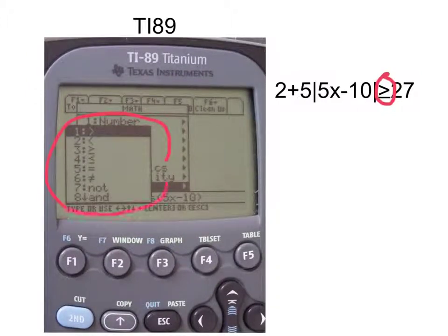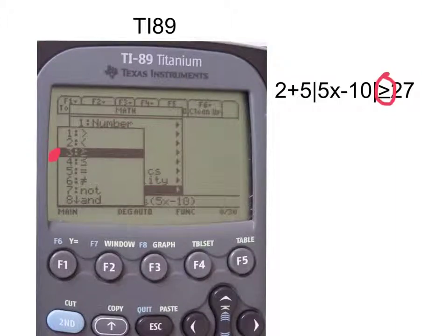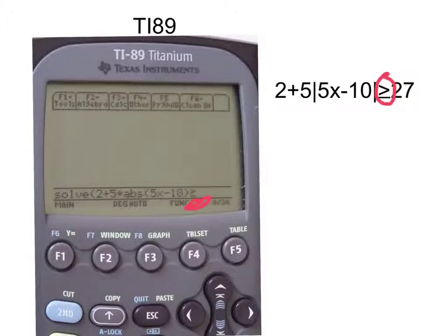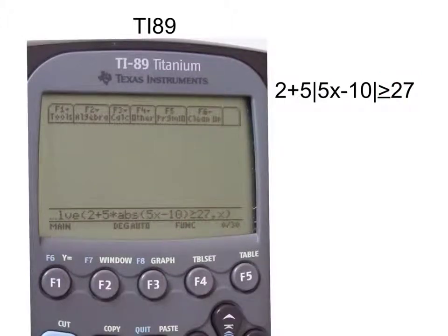Then this drop box pops up. This is where you are going to get all your inequality symbols. For this case, we want the greater than or equal, which is number three. So you either hit number three on your keyboard, or highlight number three and hit enter on the calculator. I am going to scroll down to number three, greater than or equal, and hit enter. And there it is, greater than or equal. Now finish typing in the rest of the inequality: greater than or equal to 27. Now you are going to have to put a comma and an X in close parenthesis. This lets the calculator know that we are going to be solving for X. Now just hit the enter button on the calculator to solve this inequality.